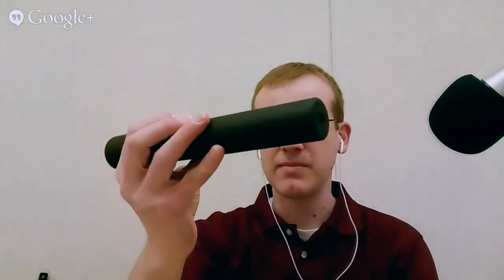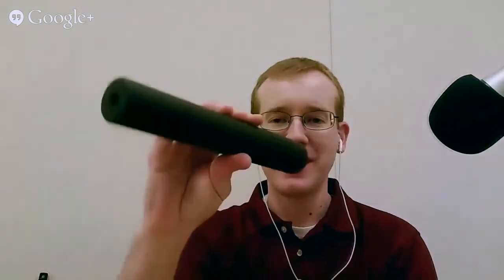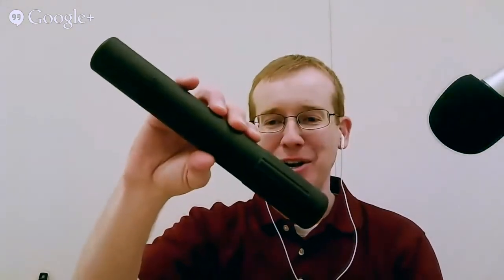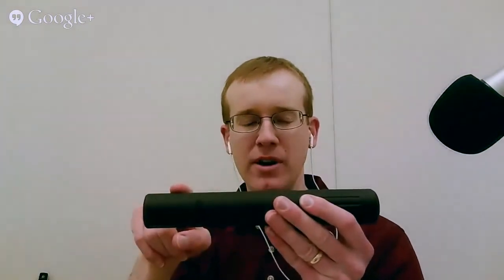And then outside of those ratchet attach systems they've also got direct attach. Here's a 30 caliber, is it a Cyclone, I still gotta get all these names down. This is the Cyclone here, and this is a direct thread, threads onto a 5/8-24 barrel. And you'll notice it's a bit longer, so you got a little bit more room for suppression, you got more baffles essentially to remove that noise and flash.